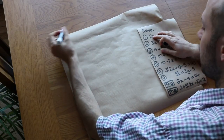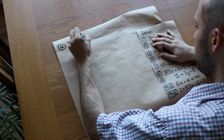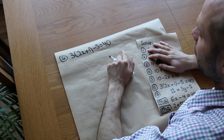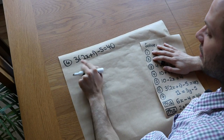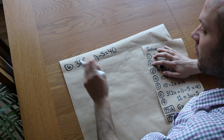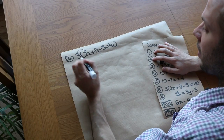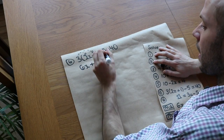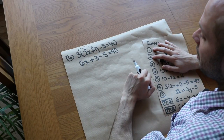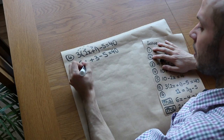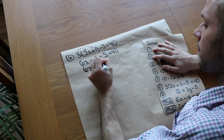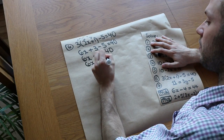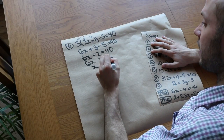The last few questions: we've got 3 times (2x plus 1) minus 5 equals 40. The first thing to do when solving equations is to expand any brackets. So 3 times 2x is 6x, and 3 times 1 is plus 3, then minus 5 equals 40. Try to collect like terms — plus 3 minus 5 simplifies to minus 2 — giving 6x minus 2 equals 40. Add 2 to both sides to get rid of the minus 2, giving 6x equals 42. Then divide both sides by 6 to get x equals 7.